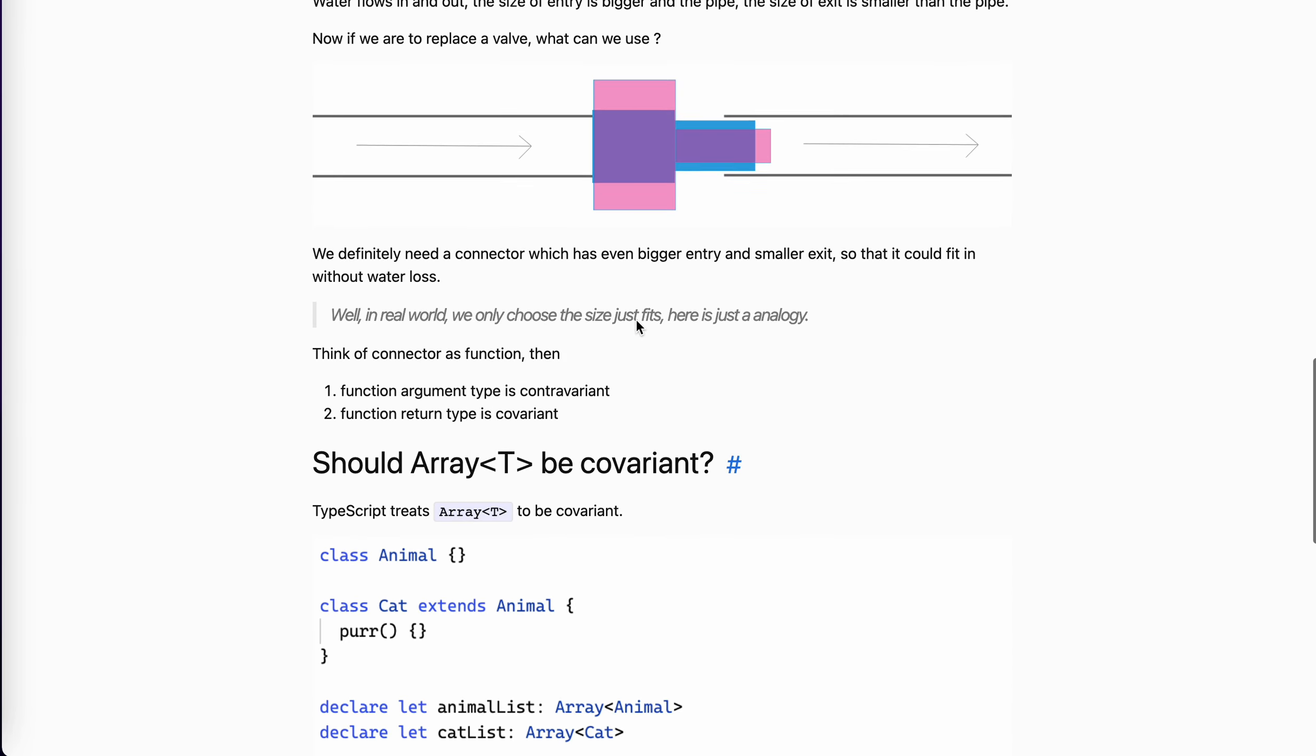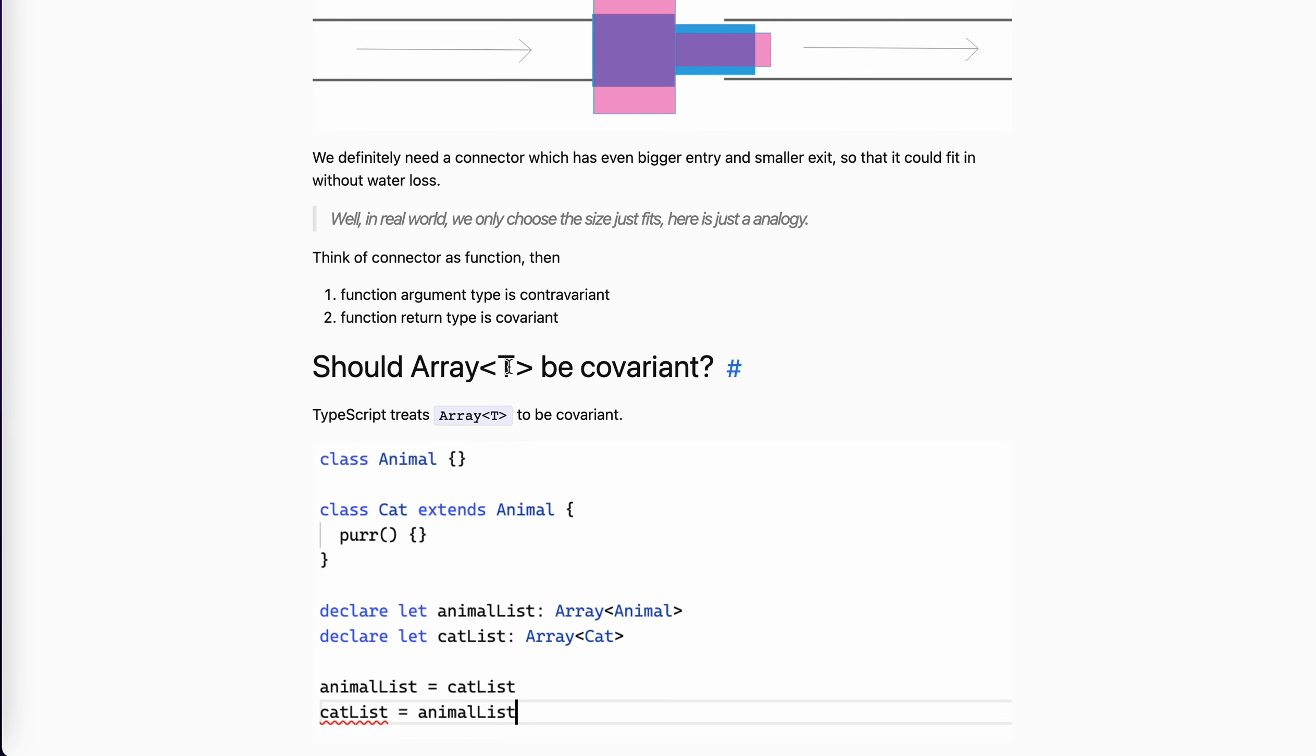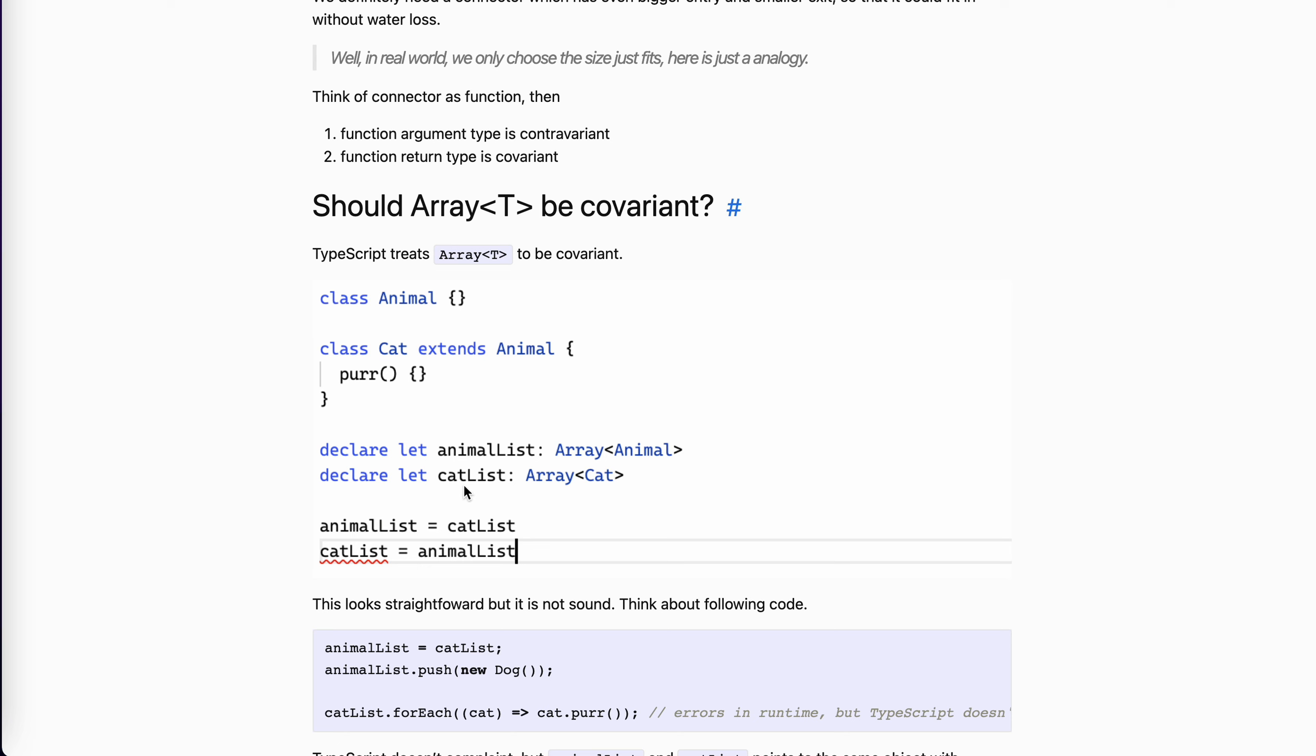And also, so in this post, if you take a look at it, there is at the last part, it talks about why Array<T> should be covariant or not. So let's take a look at how it works currently in TypeScript. So we have this Animal, we have the Cat, we have animalList and a catList.